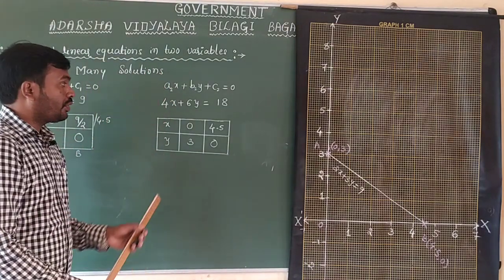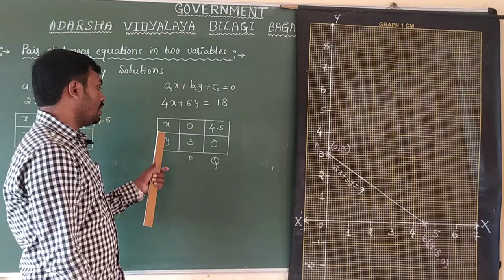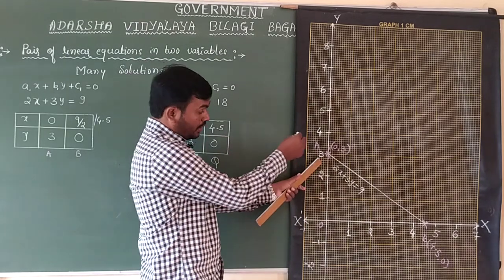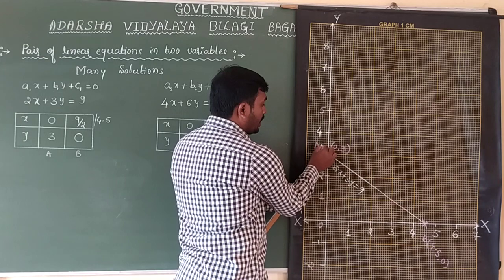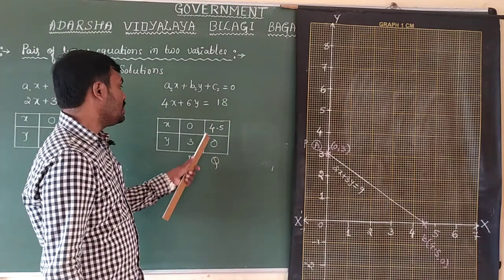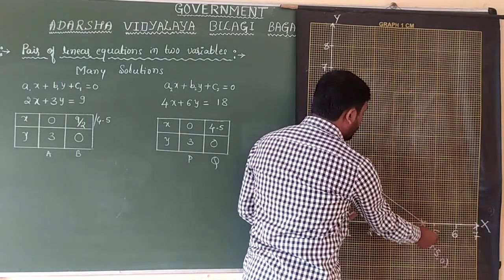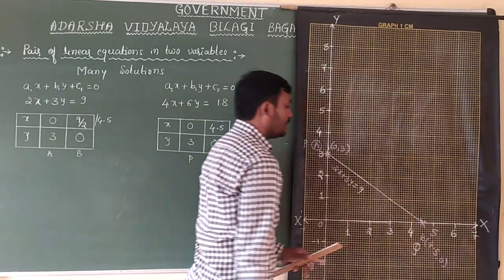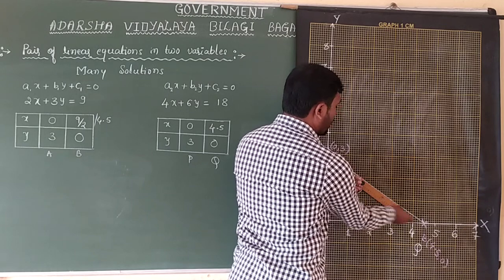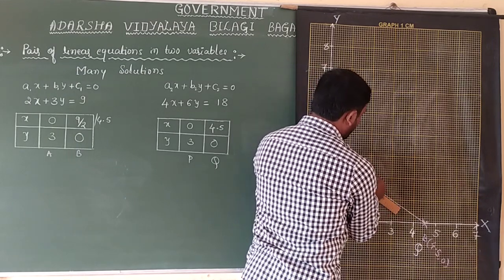Now let us plot the line for the second equation, taking points P and Q. Point P is (0, 3) — x is 0, y is 3 — which coincides exactly on point A. Point Q is (4.5, 0), which coincides on point B. So both lines share the same points and fall on the same line. If we join P and Q, that line coincides with line AB drawn previously.